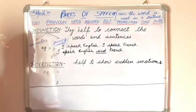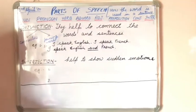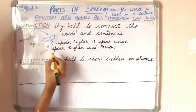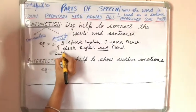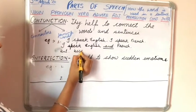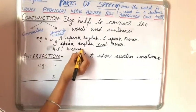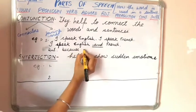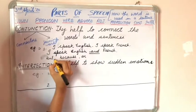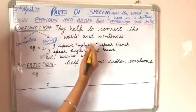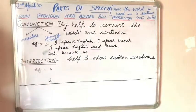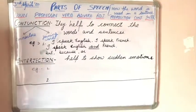Likewise, we have a few more examples of conjunctions, and they are: but, because, or. These you have also covered in your previous class.